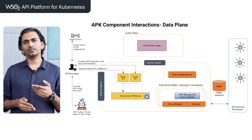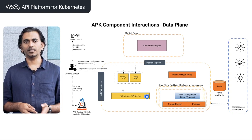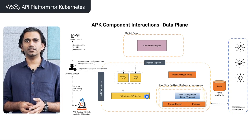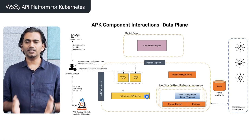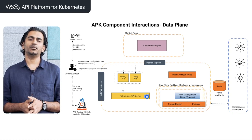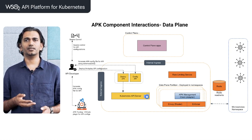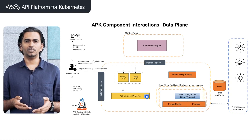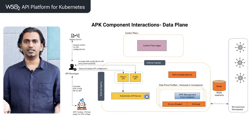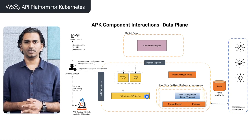We manage almost all aspects of the API lifecycle. APK is designed for cloud-native architecture — specifically designed to run on cloud-centric systems. This architecture allows you to scale to cloud scale.